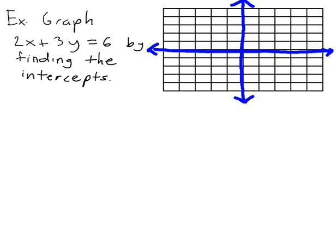This example says to graph the equation 2x plus 3y equals 6 by finding the intercepts. So the first step we've got to do is to find the x and y intercepts.